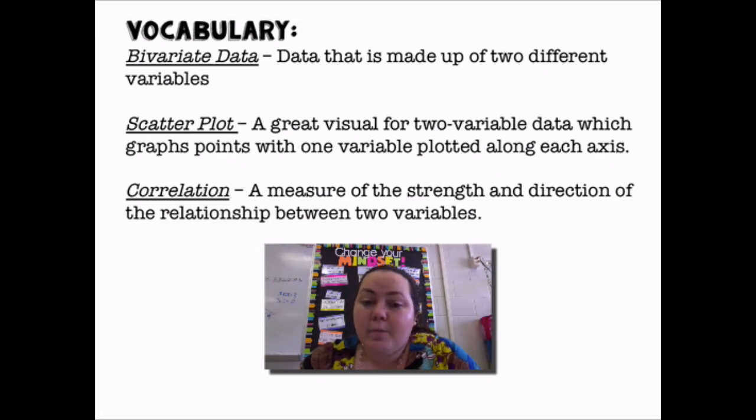A scatter plot is a great visual for two-variable data, which graphs points with one variable plotted along each axis. We would take both our variables. One variable would be on the x-axis, another variable would be on the y-axis. Then we'd make ordered pairs and plot the points.